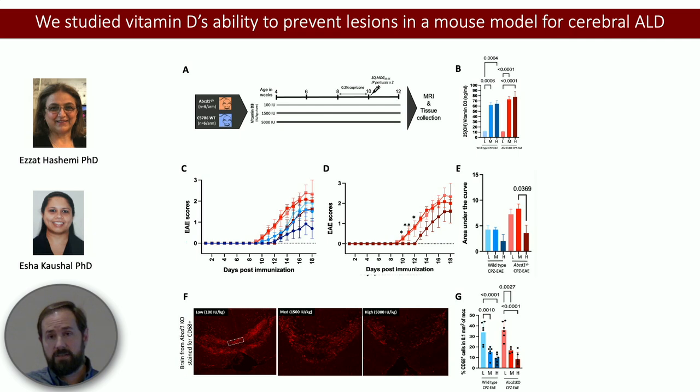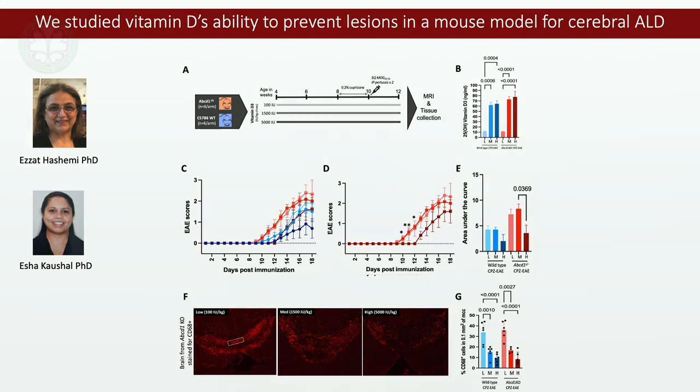We think this is the best data we have to date suggesting that vitamin D deficiency is predisposing — at least in our model. To the extent our model represents cerebral ALD, it's not perfect, but we think it's a good start. Combined with what we see from our human data, that's where we're going to find more insight. One of the next steps is to dive into the molecular mechanics of how it's working in the mouse model to see if what we're finding from our vitamin D trial of healthy boys is helpful.